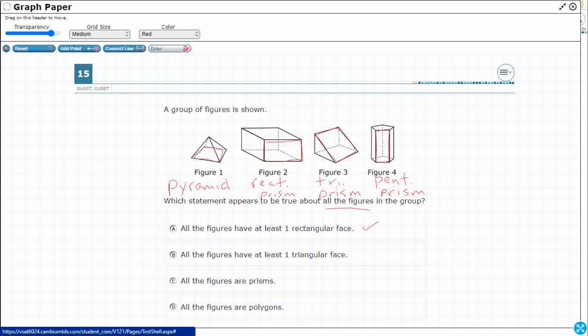B, all the figures have at least one triangular face. I'm going to change my colors on each of these here. Change to green. One triangular face. Well, I've got a triangle here, but you know what? No triangle on this rectangular prism. I do have a triangle here. No triangle here on the pentagonal prism. So B is no good because all the figures do not at least have one triangular face.